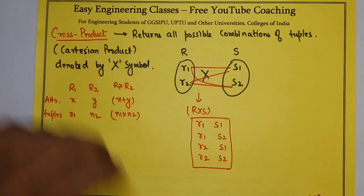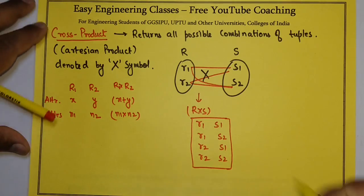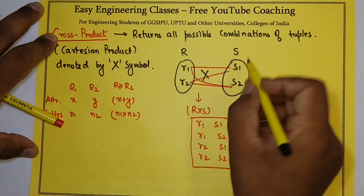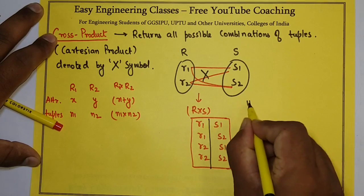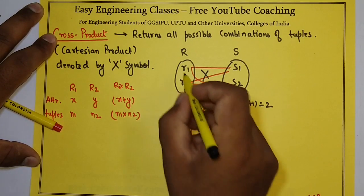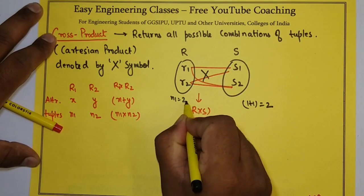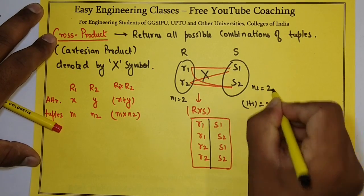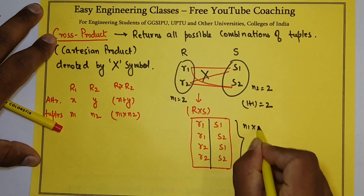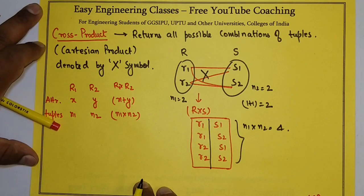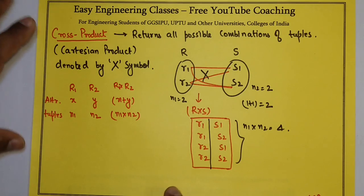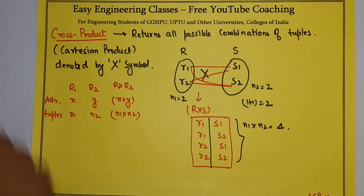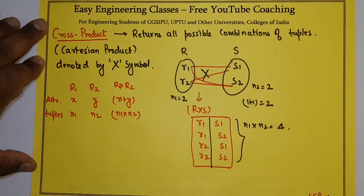As you can see in this example, R1 has X number of attributes, which is 4. R2 also has attributes. Now we will see two different examples of cross product which will help you understand the concept more clearly.